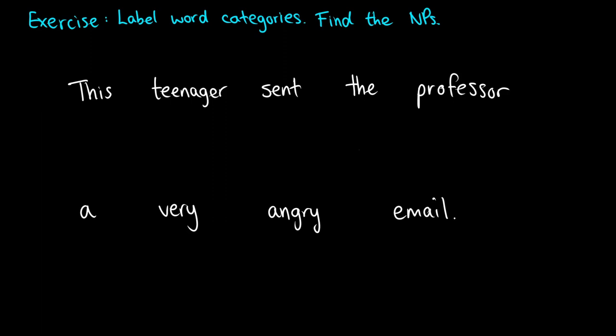This teenager sent the professor a very angry email. Why don't I start by finding the noun phrases first? So here I have a noun phrase, this teenager. I'm talking about a specific teenager. I sent the professor something. So the professor is another noun phrase. And lastly, a very angry email is our final noun phrase here.